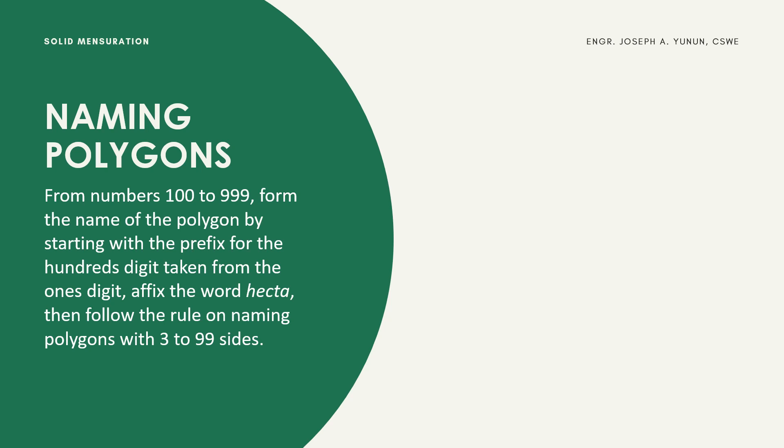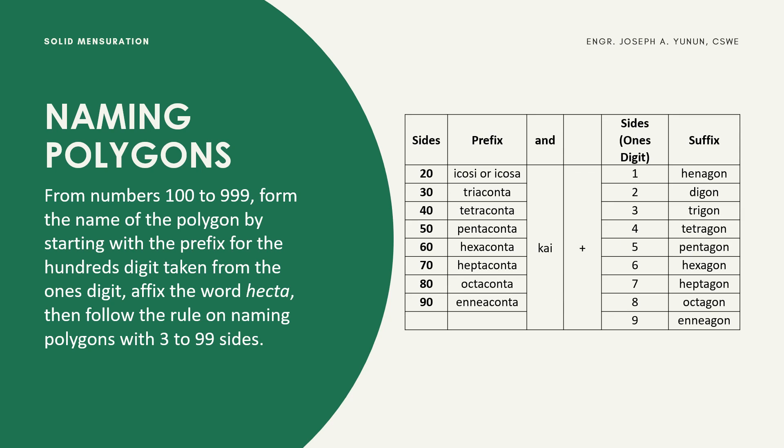For numbers 100 to 999, form the name of the polygon by starting with the prefix for the hundreds digit, then affix the word 'hecta', and follow the rule for naming polygons with 3 to 99 sides. For example, a 74-sided polygon: 70 is 'heptaconta', followed by 'kai', then 4 is 'tetragon' — giving 'heptacontakaitetragon'.